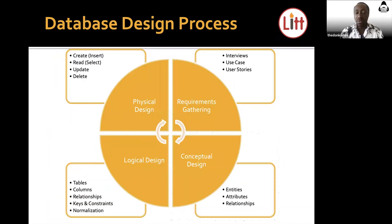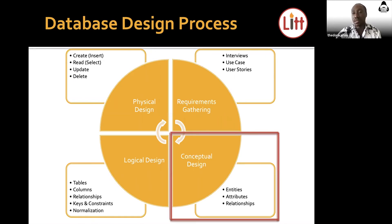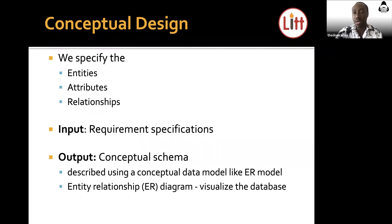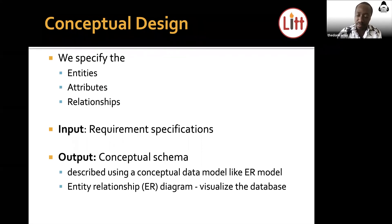We'll move on straight to the conceptual design. Under the conceptual design, this is where we look at the entities, the attributes, and the relationships. I'll be explaining what they are and how to apply them. Under the conceptual design we specify the entities, attributes, and relationships. The input comes from the requirement specification, and what comes out is a conceptual schema described using a conceptual data model like the entity relationship model, which is normally represented in the form of a diagram to help you visualize the database.